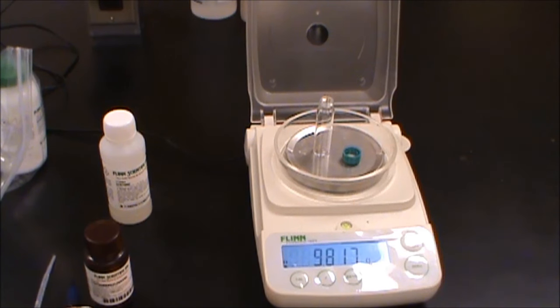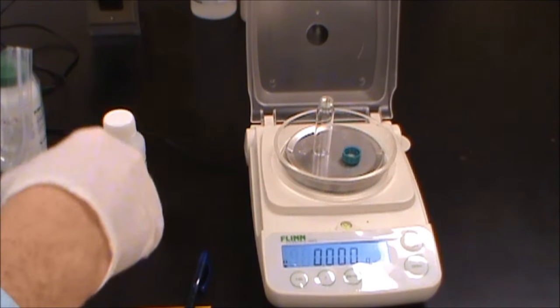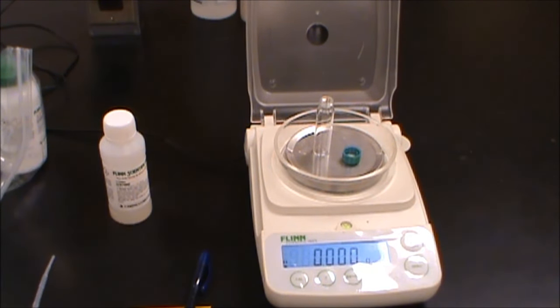First I'm going to write down the mass of my cap and vial which is 9.816 grams in case that comes in handy later. I'm going to zero that and I'm going to add some O-nitrobenzaldehyde to it. I want to add about 0.3 grams.